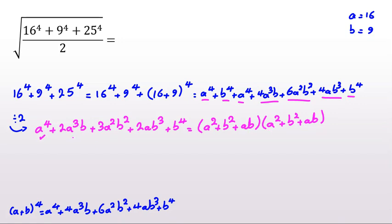a squared times b squared, b squared times a squared, ab times ab gives 3a squared b squared. Then b squared times ab is ab cubed, ab times b squared is ab cubed, so 2ab cubed. b squared times b squared is b to the 4. So it will be a squared plus b squared plus ab whole squared.